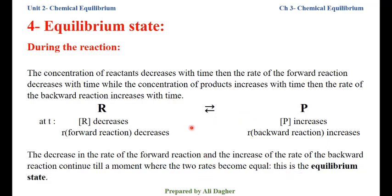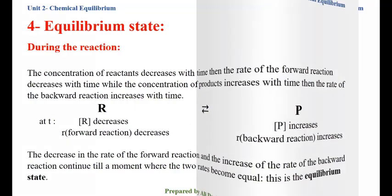This is the equilibrium state — the moment where the two rates become equal. This state is called the equilibrium state. What are the characteristics of this state?